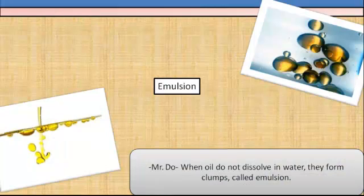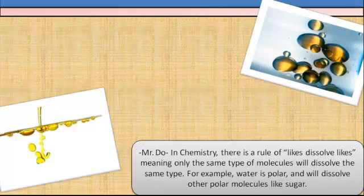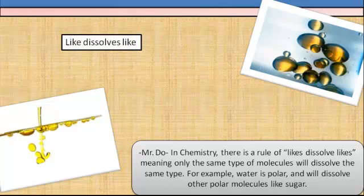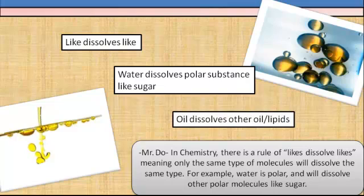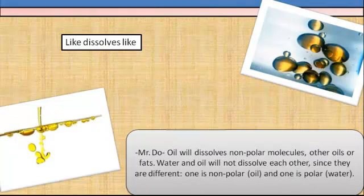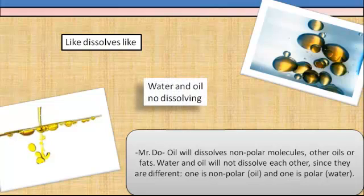When oil does not dissolve in water, it forms clumps called an emulsion. In chemistry, there is a rule called 'likes dissolve likes,' meaning only the same type of molecules will dissolve each other. For example, water is polar and will dissolve other polar molecules like sugar. Oil will dissolve nonpolar molecules such as other oils or fats. Water and oil will not dissolve each other since one is polar and the other is nonpolar.